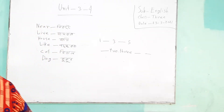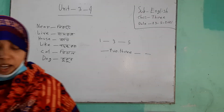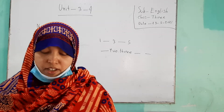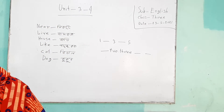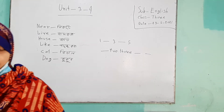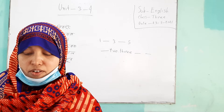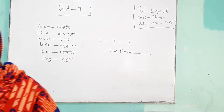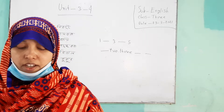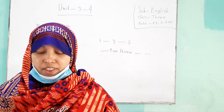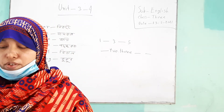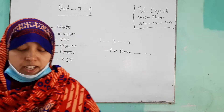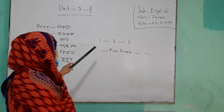[Bengali instruction: Look at these words. From your book, there are numbers from 1 to 5. These numbers — you have to learn to read and write them. 1, 1 means 1; 2, 2; 3, 3; 4, 4; 5, 5.]